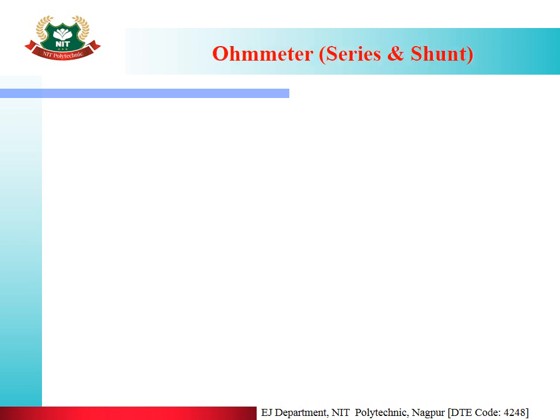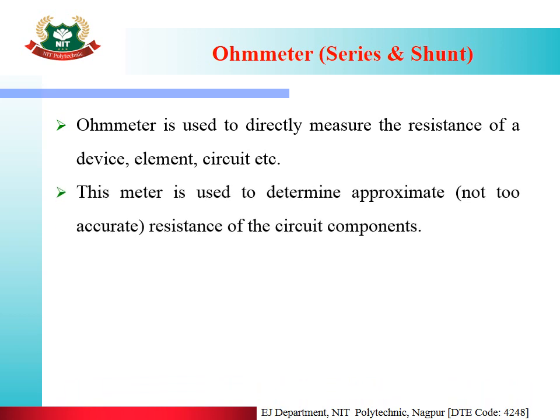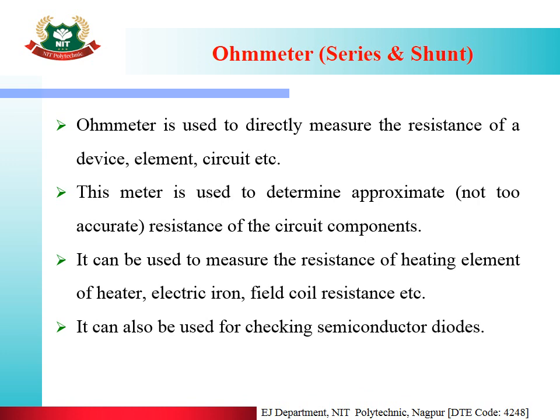Ohmmeter — series and shunt type: An ohmmeter is used to directly measure the resistance of a device, element, or circuit. This meter is used to determine the approximate resistance of circuit components. The resistance of circuit components is measured using the ohmmeter, though not accurately — only approximately. It can be used to measure the resistance of heating elements of heaters, electric irons, field coil resistance, etc. It can also be used for checking semiconductor diodes.